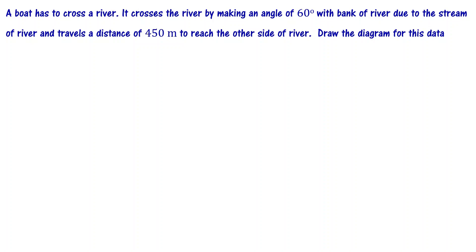A boat has to cross a river. It crosses the river by making an angle of 60 degrees with the bank of the river due to the stream of the river, and travels a distance of 450 meters to reach the other side of the river. Draw the diagram for this data.